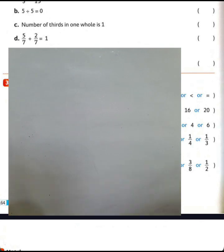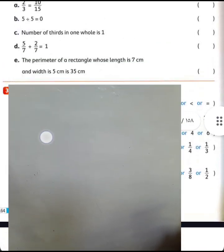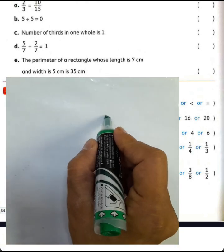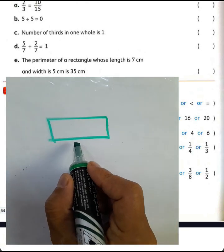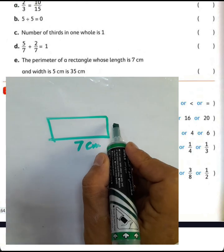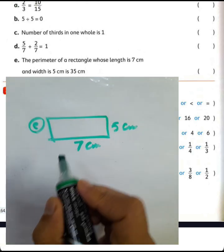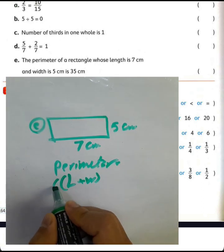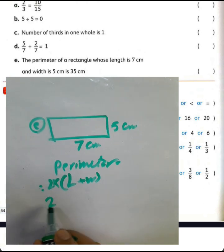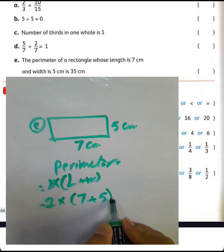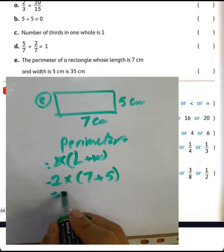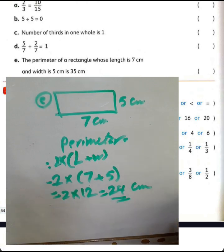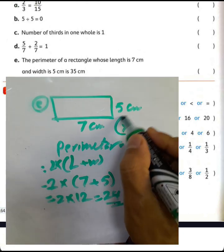Next example: the perimeter of a rectangle whose length is 7 cm and width is 5 cm is 35. No, because the perimeter equals (length plus width) times 2. With length 7 cm and width 5 cm, the perimeter equals 2 times (7 plus 5) equals 2 times 12 equals 24 cm. So we must write false here.